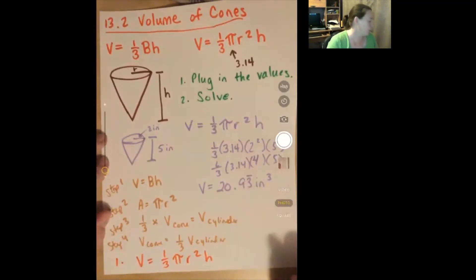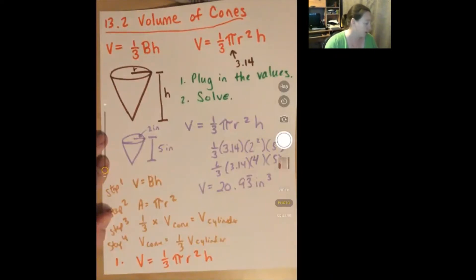Example one: find the volume for each cone. They plug in all their numbers and multiply through, then divide by three. They do that for both cones.